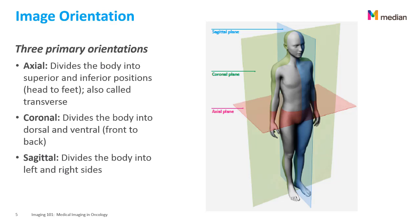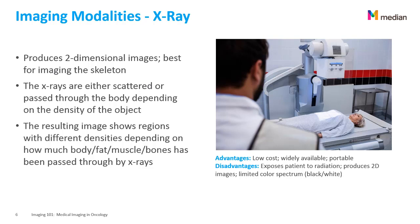Let's move on to the different imaging modalities, or technologies used for taking medical images. X-ray is the simplest and most famous imaging modality. It produces a 2D image and is best for imaging the skeleton since bones show very well on X-rays. An X-ray machine sends out a beam of X-rays at the patient that are captured on the other side by an X-ray film or a digital detector. X-rays either get blocked or passed through the body depending on the density of the matter they encounter. The resulting image shows regions with different densities depending on how much body, fat, muscle, and bone has been passed through.